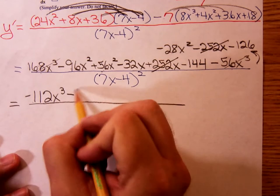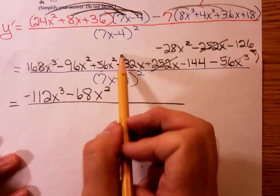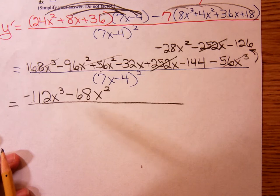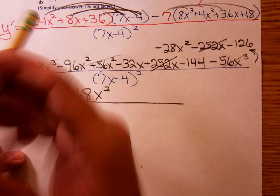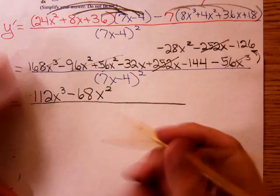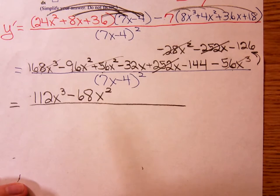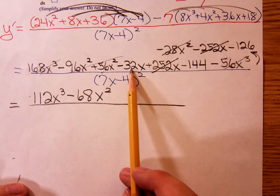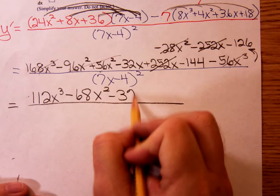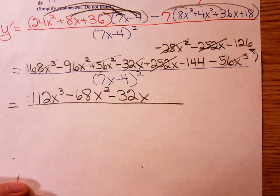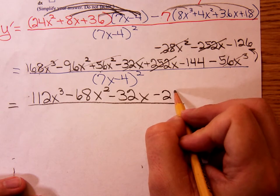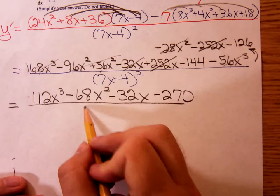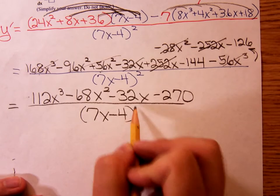Okay, so a negative... Is that a negative 68x squared? Wait, why is 112? No, let's see. What is it? Is 112 negative? Oh, it's not negative. You're right. Right there. Okay. And that's gone. We have only one x term. That negative 32x. And our constant terms. That's a negative 270, minus 270, all over 7x minus 4 quantity squared.